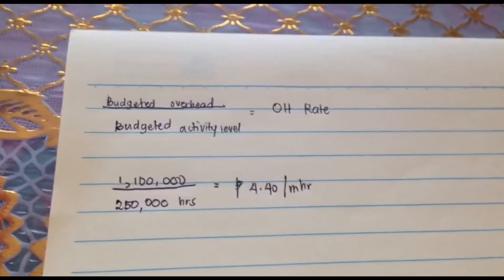Next is for the second requirement. What is the applied overhead for the current year? What we have to do is to multiply the overhead rate that we got from requirement number one with the actual activity level.